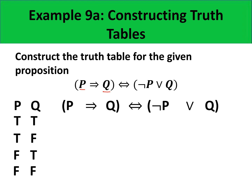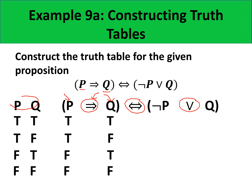For this particular example, we will evaluate this implication first, followed by this disjunction. Whatever we get from this implication and disjunction shall then be used to evaluate the biconditional. To evaluate the implication, we copy the values of P and Q in the following columns and evaluate. The implication will be false whenever the hypothesis is true and the conclusion is false. The rest of the possibilities will have a true value.